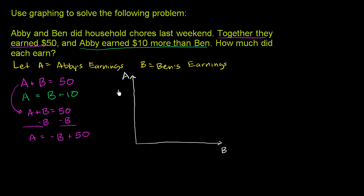When B equals 0, A is 50. So we know our A-intercept. We normally call that a y-intercept, but now this is the A-axis. This is 10, 20, 30, 40, and 50. If Ben made $0, Abby would make $50 based on that first constraint. That's a point on the line.